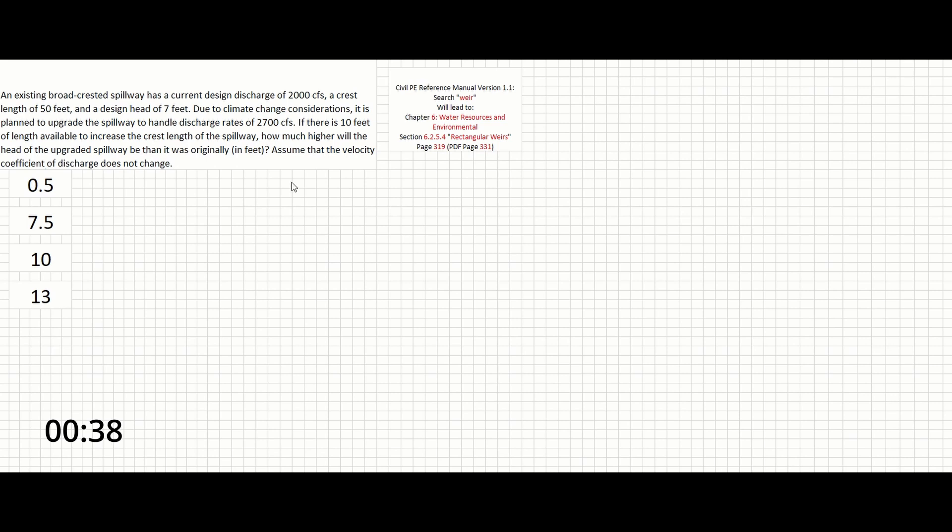So this problem is pretty straightforward. The first thing you have to know is that a spillway is a type of weir. Searching weir in the reference manual will take us to page 319. The problem notes that this is a broad-crested spillway, so let's look for the section on broad-crested weirs.